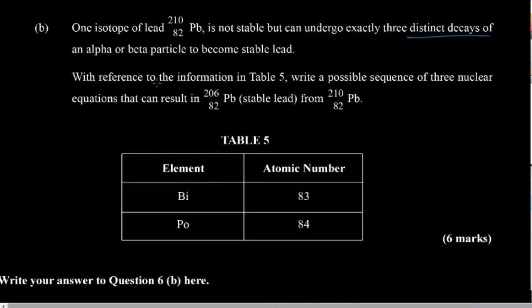With reference to the information in table five, we are to write the possible sequence of three nuclear equations that can result in the formation of stable lead from unstable lead.